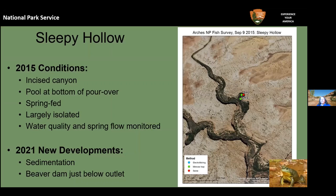Historically, Sleepy Hollow pond has been very consistent — there's a story that in the 1950s, people would drive down from the north on hot summer days to swim and party in the cool waters. This pond has been in the park for a long time; it's largely isolated from other waters except during rainstorms, at the bottom of a pour-over, spring-fed as well as rain-fed. Since our 2015 surveys, in 2021 beaver began building a dam just below the outlet of the spring, which may complicate things.